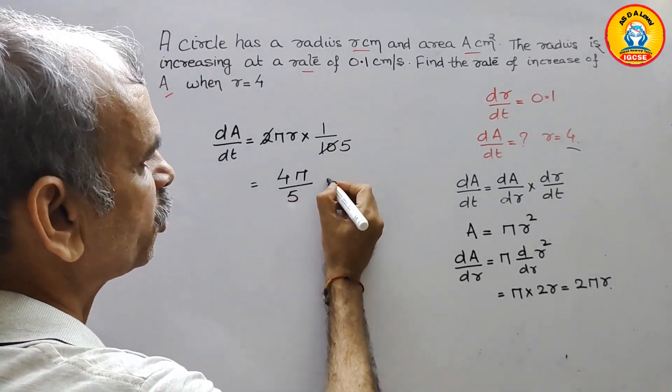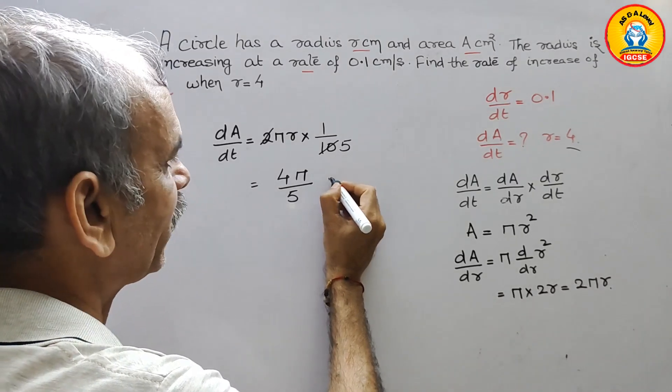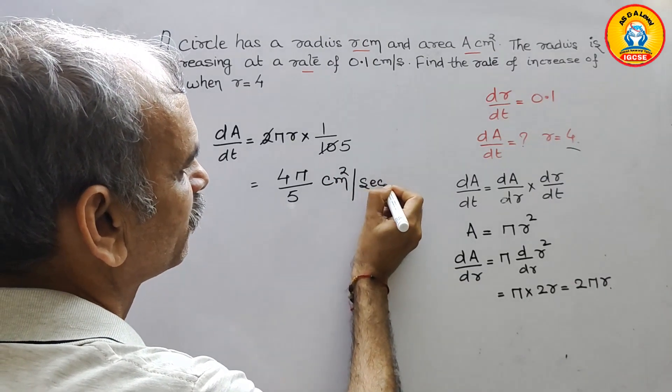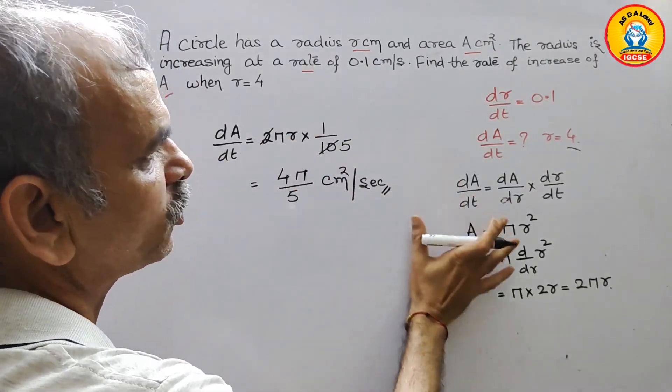And this is your area, that is centimeter square per second. So this is the answer for this question.